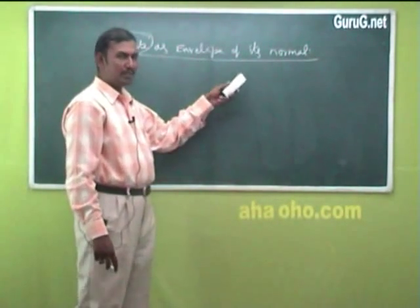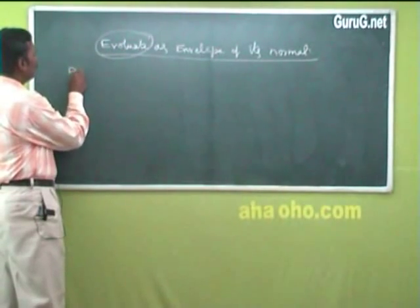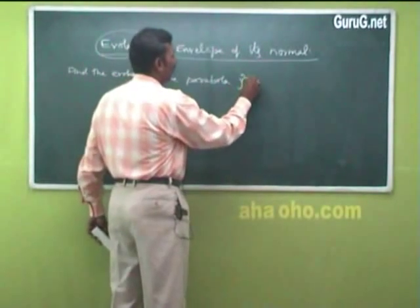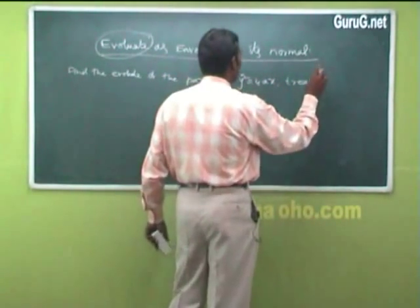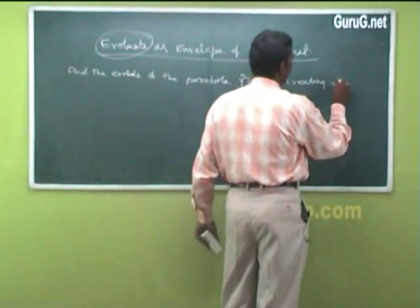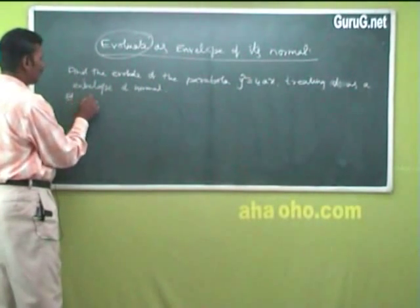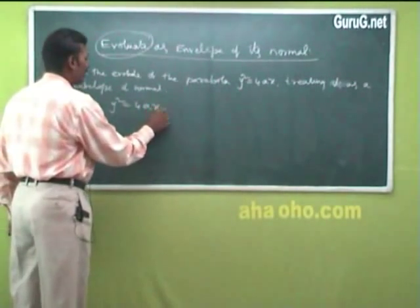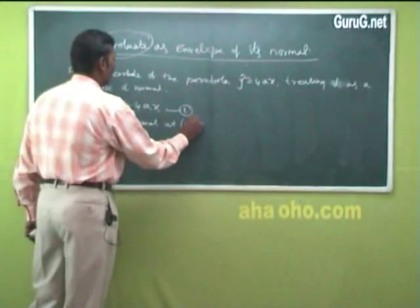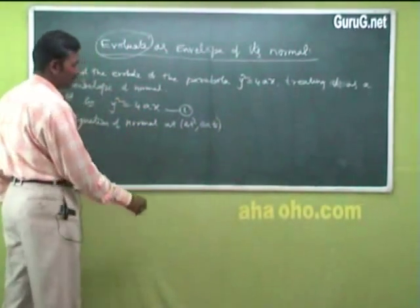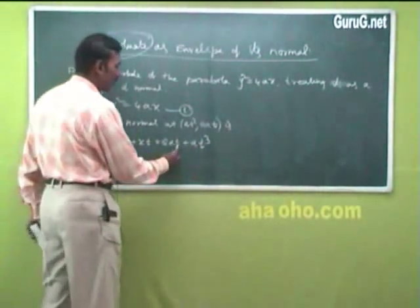The locus of the center of curvature is the evolute. The equation of the evolute is what we find. For example, find the evolute of the parabola y² = 4x, treating it as an envelope of its normals.